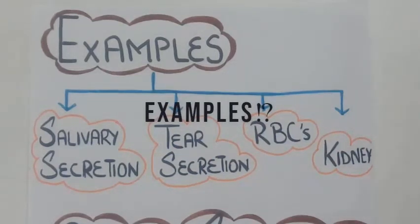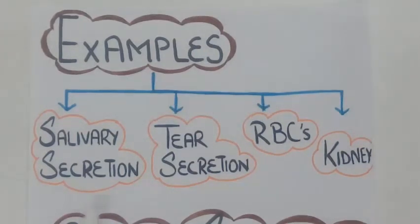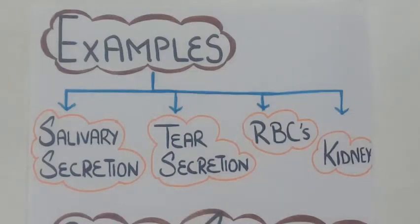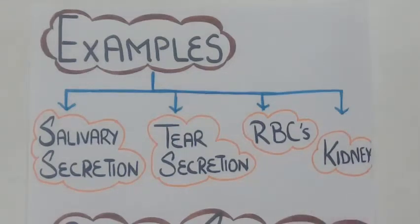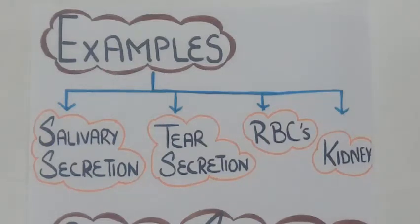Examples of aquaporins: aquaporins are found in the salivary gland, involved in secretion of saliva; the tear gland, involved in tear secretion; in red blood cells, where they control and regulate the volume and pressure as RBCs pass through the capillaries; and most importantly, in the kidney. Aquaporins are found in the epithelial cells of the distal and collecting tubules of the kidney, where they increase the uptake of water from the tubules back into the body, increasing water reabsorption from the urine filtrate.